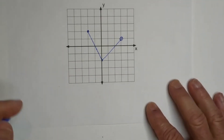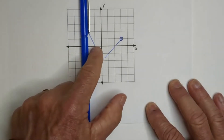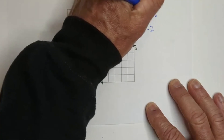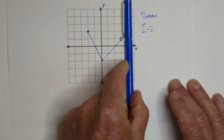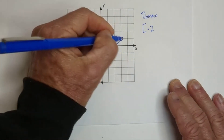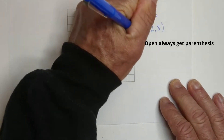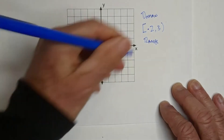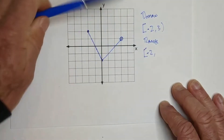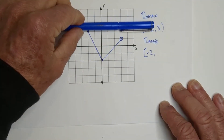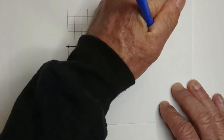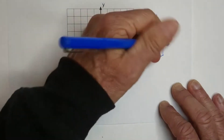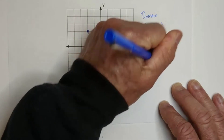On the final example, starting on the left we move over and hit at negative two — it's a straight line and closed, so we use a bracket. Then from the other side we hit at positive three, open, so we use a parenthesis. Domain is [-2, 3). For the range, going from the bottom we hit negative two with a straight line, so brackets. Coming down from the top, we hit positive two and it is closed, so brackets. Range is [-2, 2]. Is it a function? Yes, because it only hits in one place.